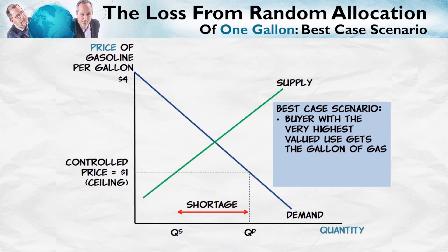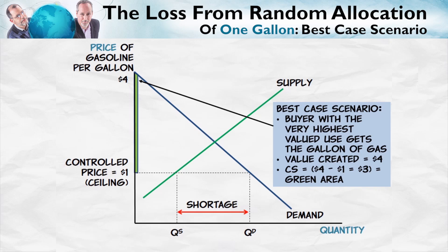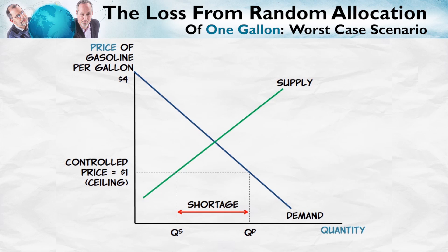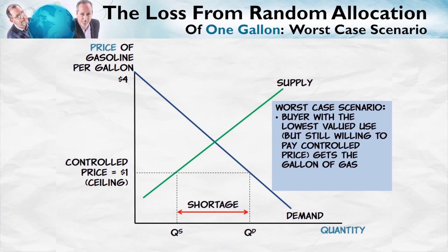The best case scenario for random allocation is that this one gallon of gasoline goes to the buyer with the highest valued use — this buyer up here. In that case, $4 of value is created and consumer surplus is $3: the $4 of value created minus the $1 for the price. The worst case scenario is that the buyer with the lowest valued use randomly ends up with the gallon of gasoline. In that case, the value created is $1 — this buyer is still willing to pay the controlled price — so that's $1 of value created, or consumer surplus of zero. It costs them $1, they get something worth $1 to them, so the consumer surplus is zero.